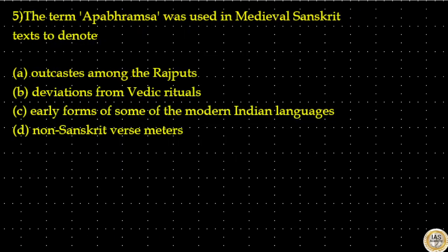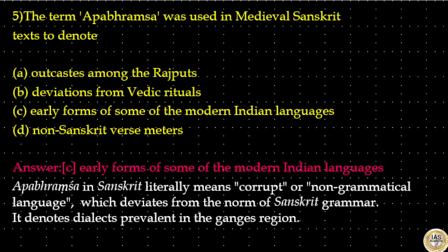The term Apabhramsa was used in medieval Sanskrit texts to denote which of the following? Option A: Outcastes among the Rajputs. Option B: Deviation from Vedic rituals. Option C: Early forms of some of the modern Indian languages. Option D: Non-Sanskrit verse matters. The answer is option C: early forms of some of the modern Indian languages. Apabhramsa in Sanskrit literally means corrupt or non-grammatical language, which deviates from the norms of Sanskrit grammar. It denotes dialects prevalent in the Ganges region.